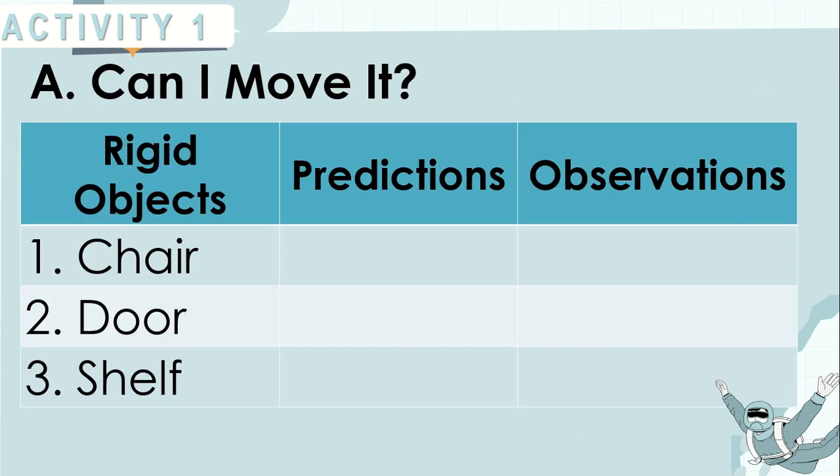A. Can I move it? Here are the rigid objects: Chair, door, and shelf. Write your predictions as well as your observations.